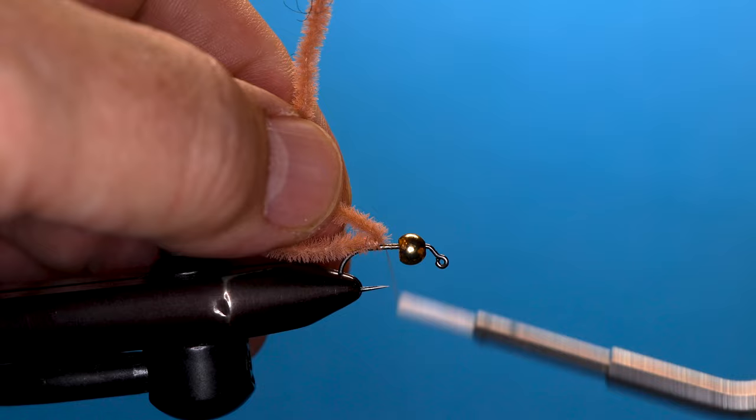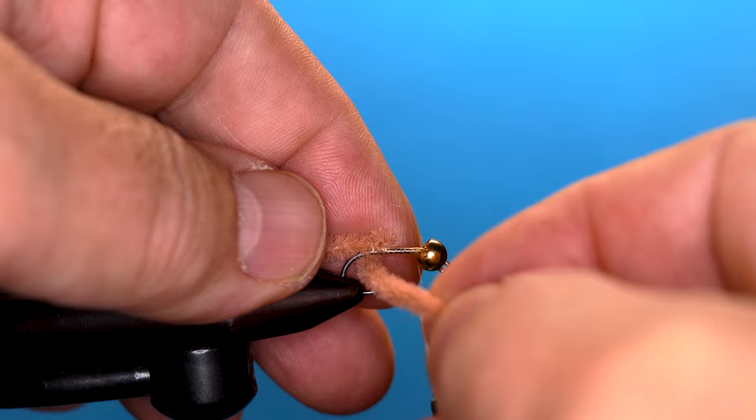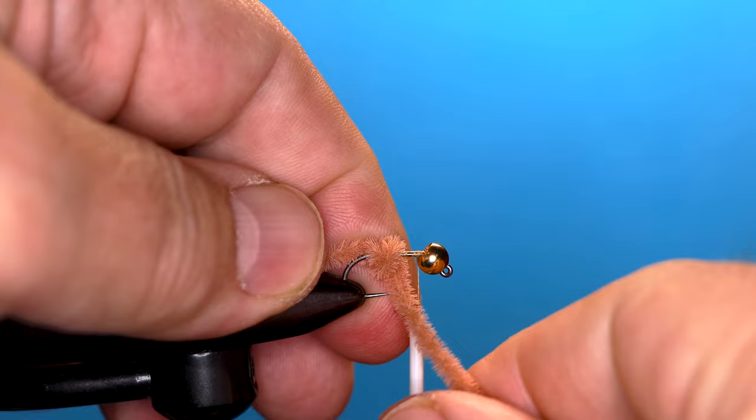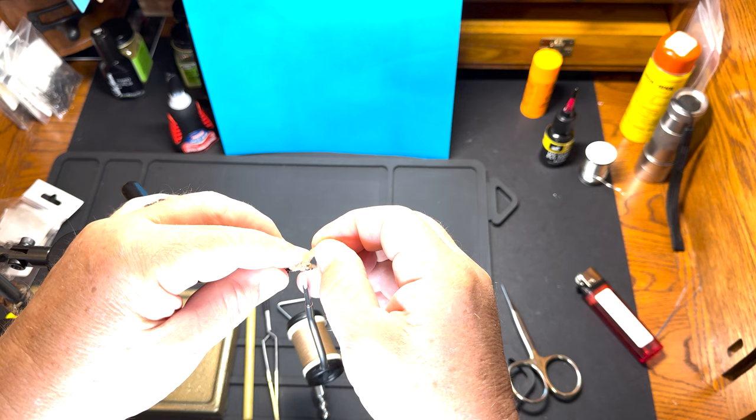Couple in front of it, more in back, get it on good. Bring that thread up to the bead. We're just gonna take this and wrap a body—wrap it right up tight to the head of the fly. Put a couple thread wraps on it, and we'll do a few more in the front.